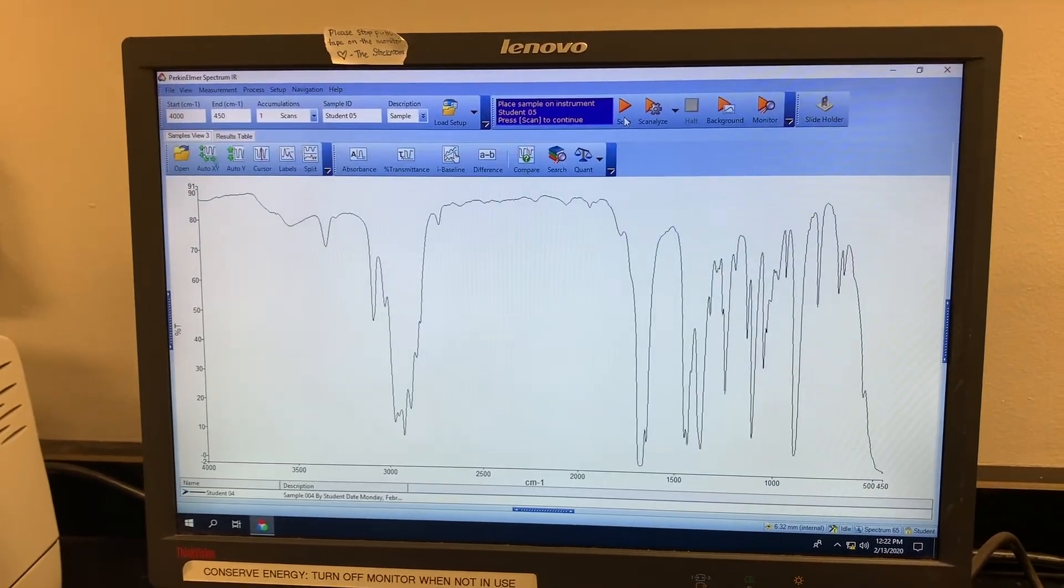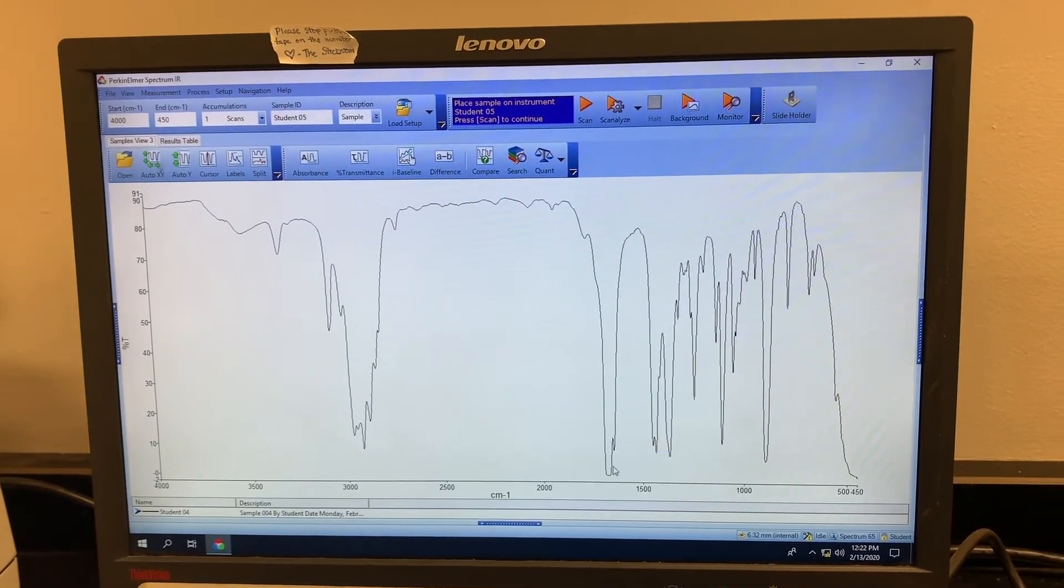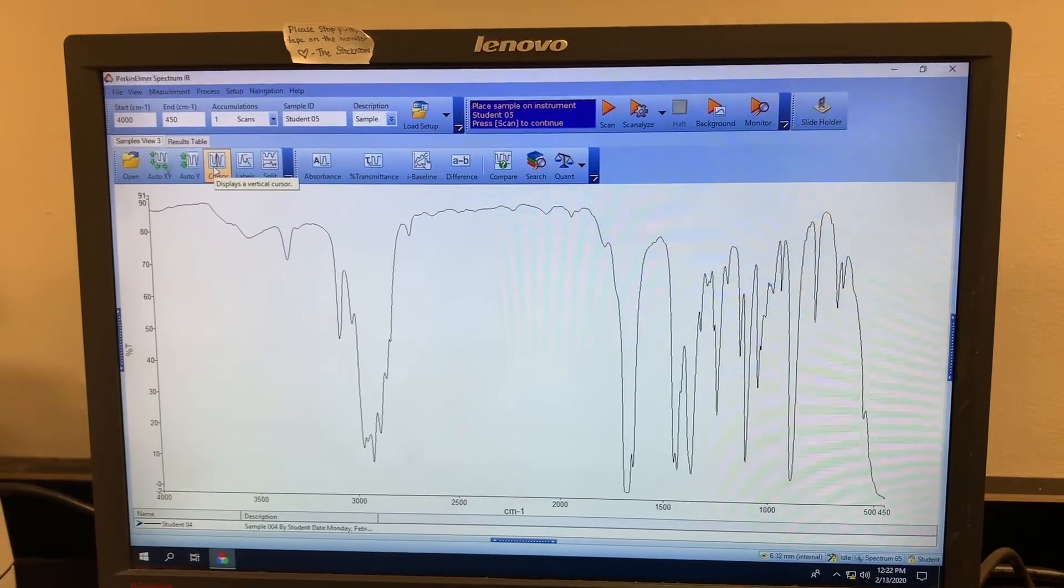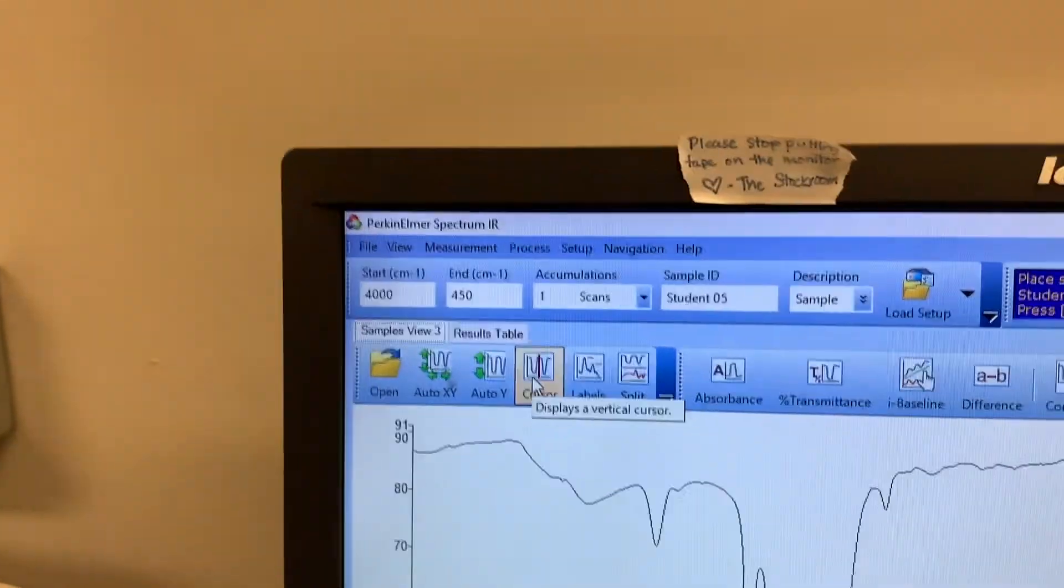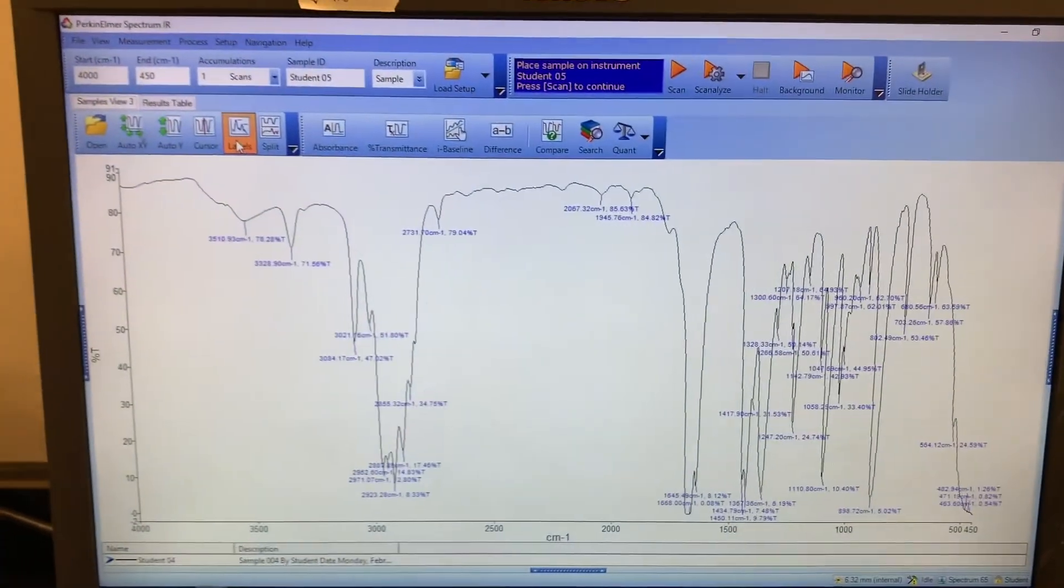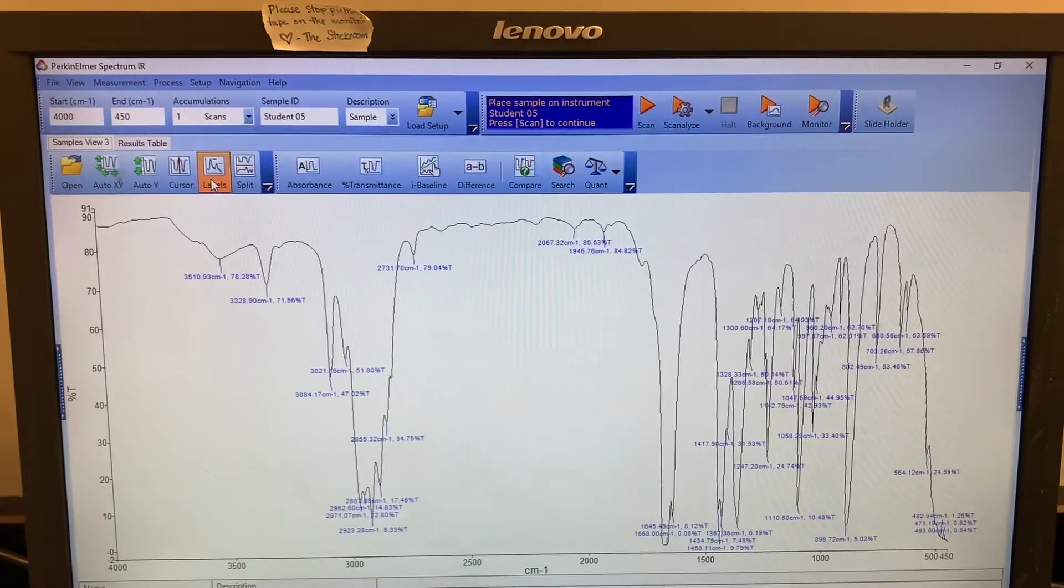Main things we're going to be looking for, really the one main thing is going to be this one right here, this is our carbonyl peak, maybe some alkene peaks as well. I'll just show you how to do it for a couple. So up here we have some options, we have the labels button. I recommend not using that button because it's just too much information. So I'm going to click that again.